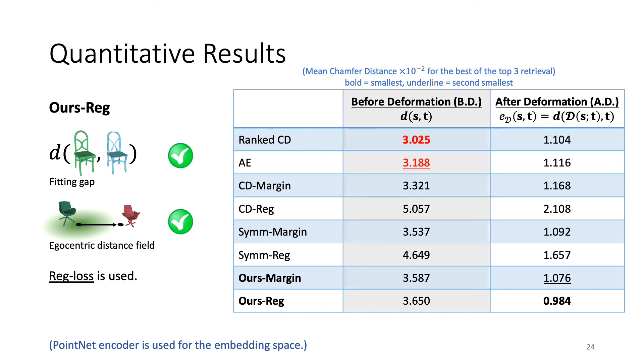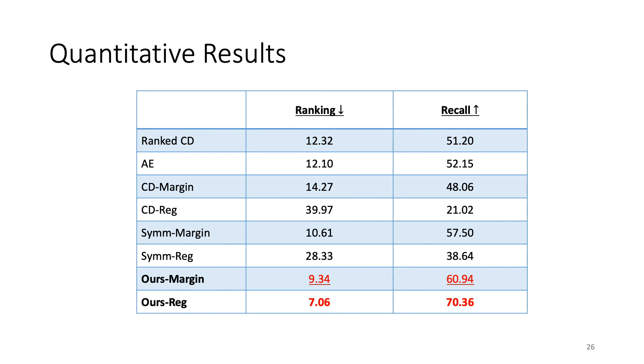As shown, baselines such as Rank CD and AE achieve lower fitting errors before deformation, as they only capture geometric similarities of the shapes without considering the deformations. However, our approaches achieve the best fitting errors after deformation, compared to all the baselines, as we are able to retrieve shapes that are deformation-aware. We also compare quantitatively using different evaluation metrics, such as Ranking and Recall, and show that our approaches still outperform the other baselines.